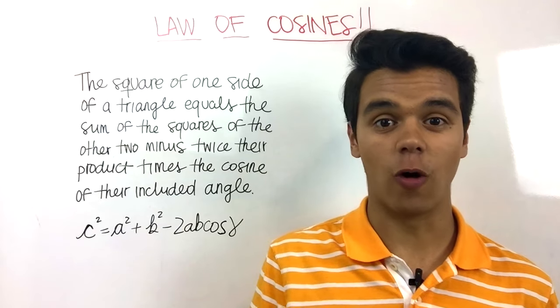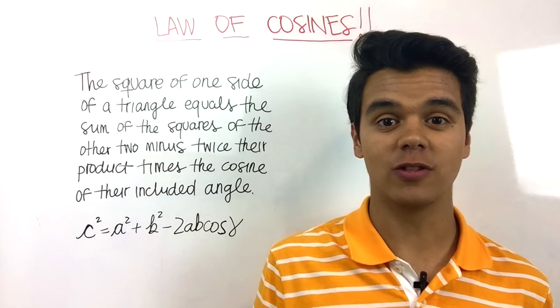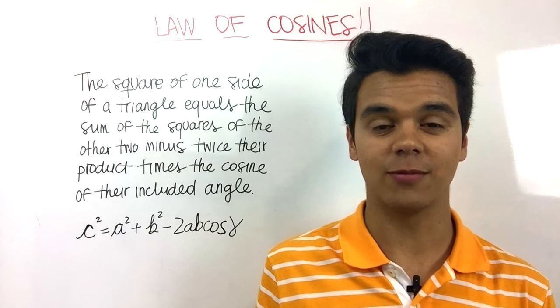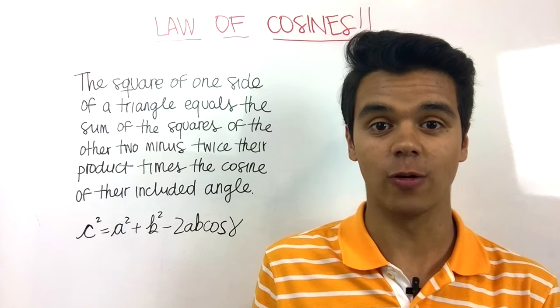The cosine law says that the square of one side of a triangle is equal to the sum of the squares of the other two sides minus twice their product times the cosine of their included angle.